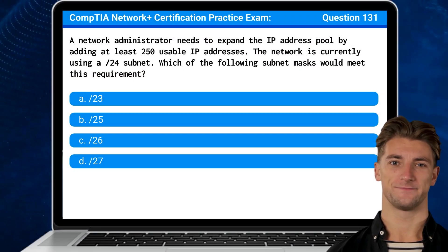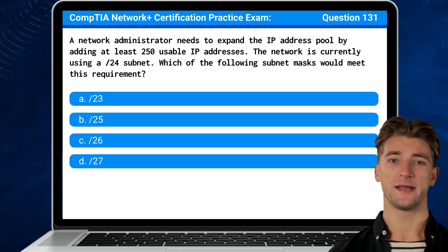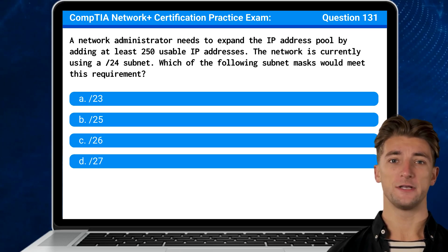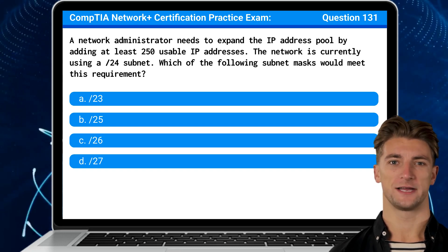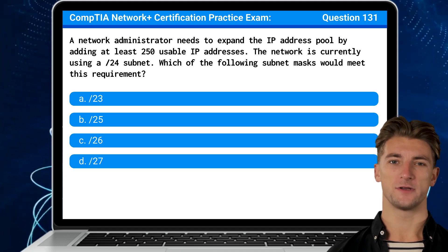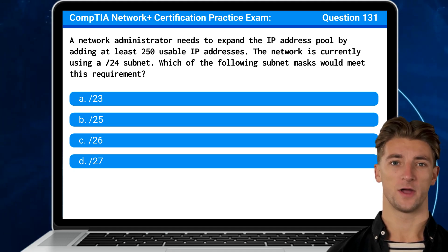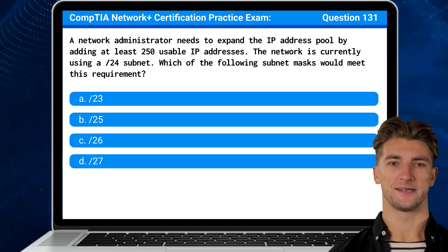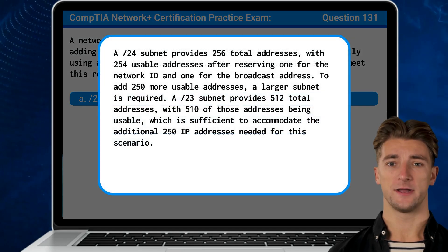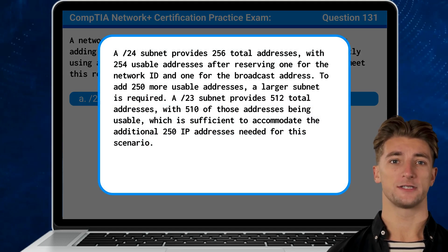Question 131: A network administrator needs to expand the IP address pool by adding at least 250 usable IP addresses. The network is currently using a /24 subnet. Which of the following subnet masks would meet this requirement? The answer is A, /23.